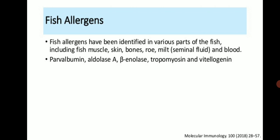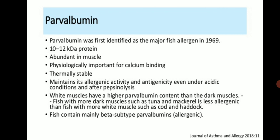Parvalbumin was first identified as a major fish allergen in 1969. It is a 10 to 12 kilodalton protein, abundant in muscle, physiologically important in calcium binding. It is thermally stable and maintains its allergenic activity even under acidic conditions and after pepsinolysis.